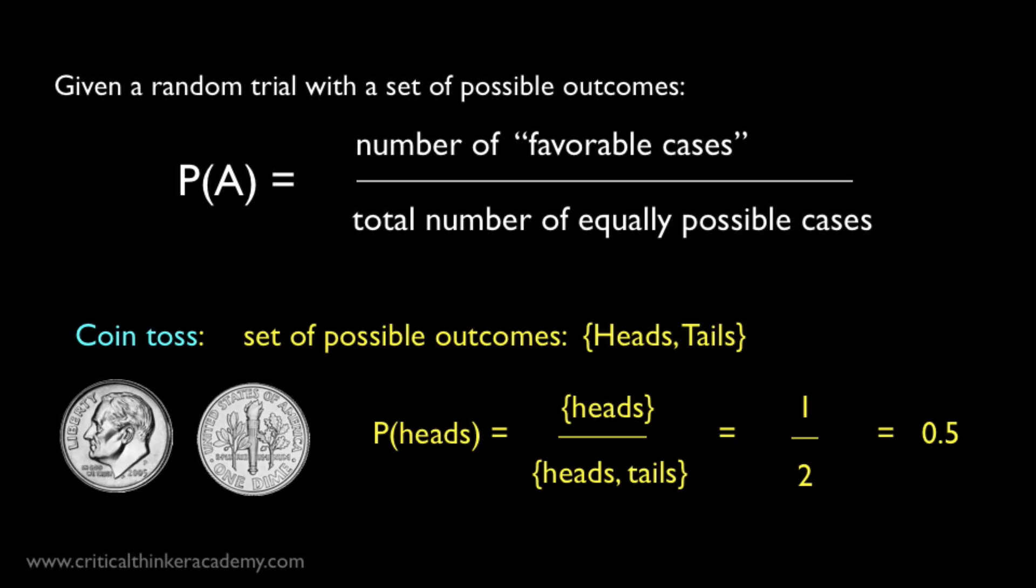So if we're talking about a coin toss, the probability of it landing heads is obviously one-half on this interpretation. There's only two possible outcomes, heads or tails, so the denominator is 2. And of those two, there's only one case where it lands heads, so the numerator is 1.